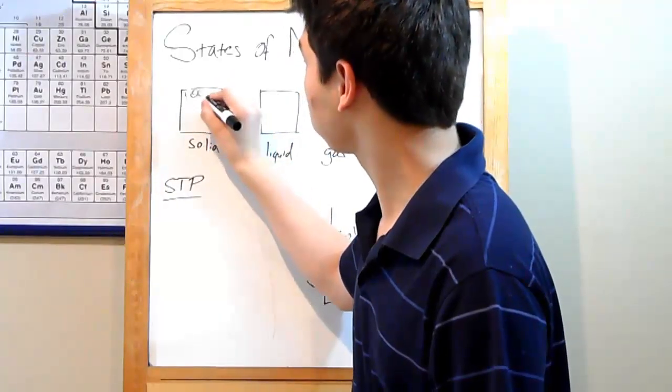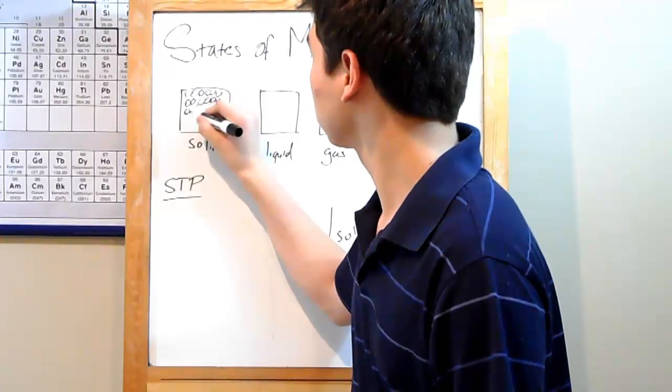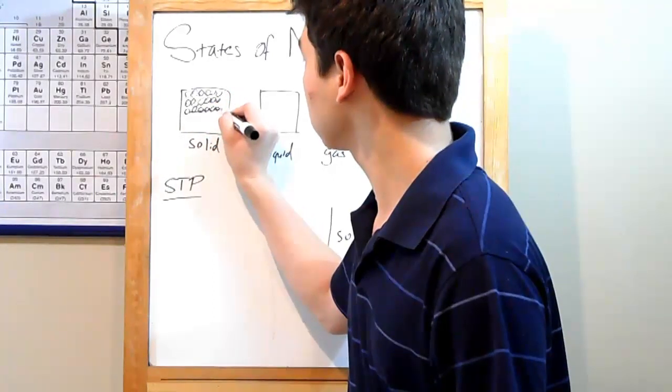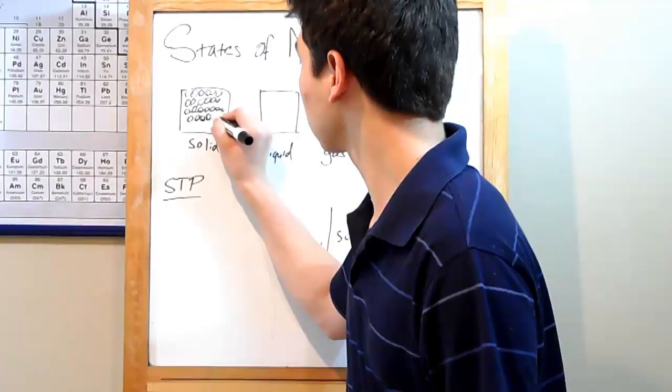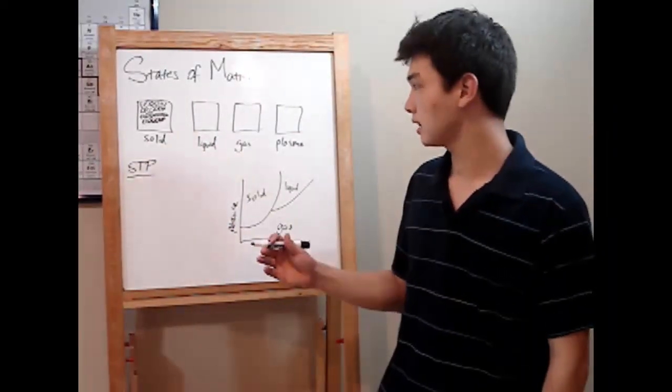Solids contain a number of very densely packed particles. These particles see very little motion, and they have a lot of very strong bonds between them. If you're talking entropy, solids don't have very much, and they hardly move around.